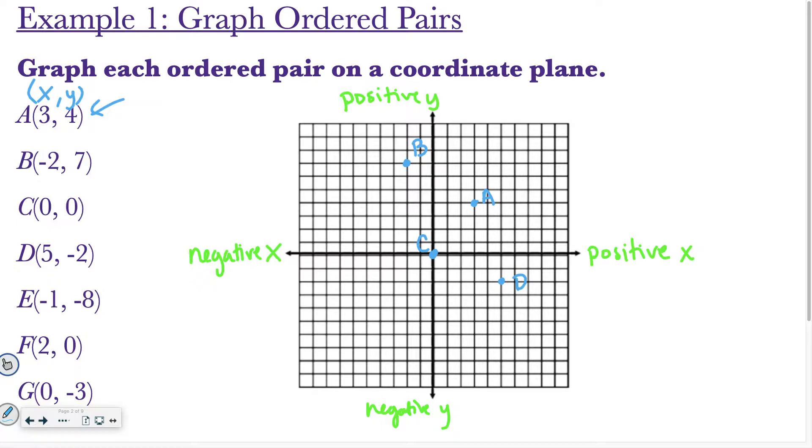I want you to try to graph E, F, and G on your own. Good luck. All right, I labeled E, F, and G in red, so that way it's easier for you guys to see where they should be. If you have any questions about that, please be sure to raise your hand and ask for help.